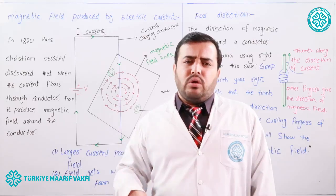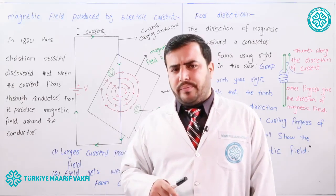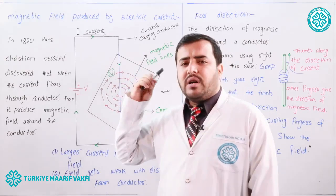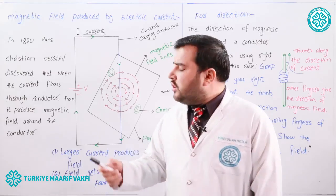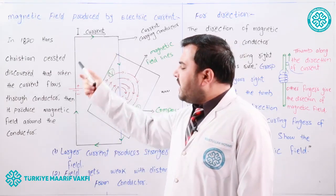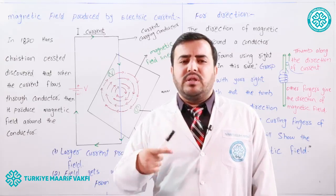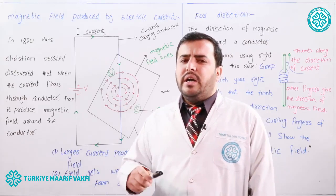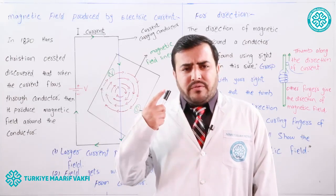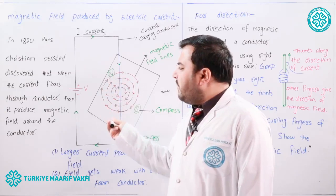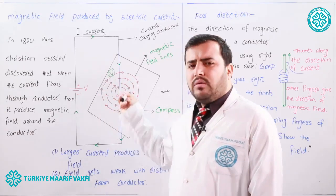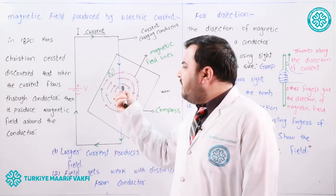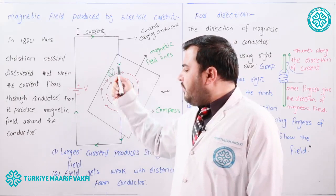His experimental arrangement is shown here in this figure. We have a conducting wire passed vertically through a paperboard, and on the paperboard we placed compass needles. When the conductor is connected with the battery, current starts to flow through the conductor, and it produces a magnetic field around the wire, which is indicated by the deflection of the compass needle.